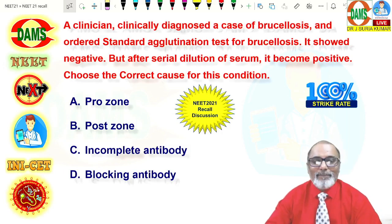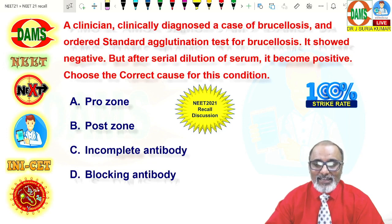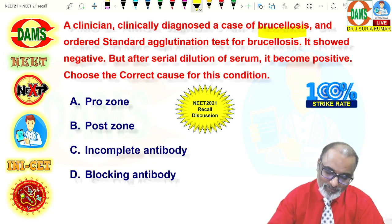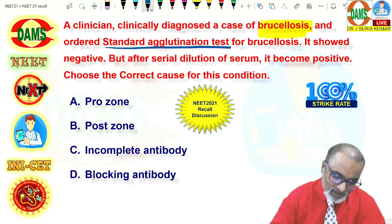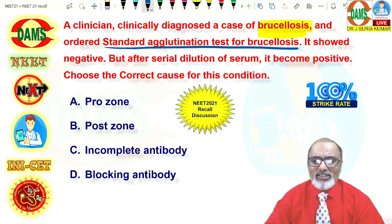We are going to see another question of NEET 2021 100% strike rate. A clinician clinically diagnosed a case of brucellosis and ordered standard agglutination test for brucellosis. It is called SAT, SAT-B, standard agglutination test.